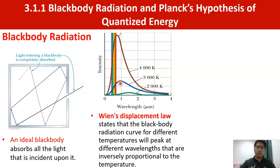For 4000 K the intensity peaks between 0 to 1 micrometer, nearer to zero compared to 3000 K. The key point is that temperature peaks at different wavelengths, and these peak wavelengths are inversely proportional to the temperature.